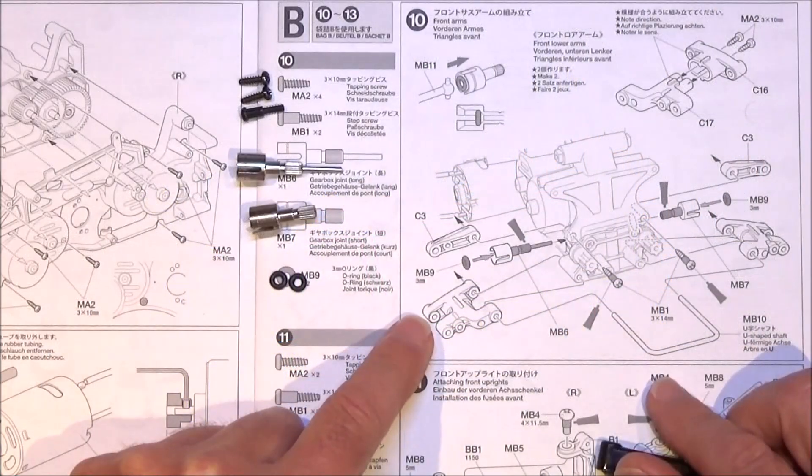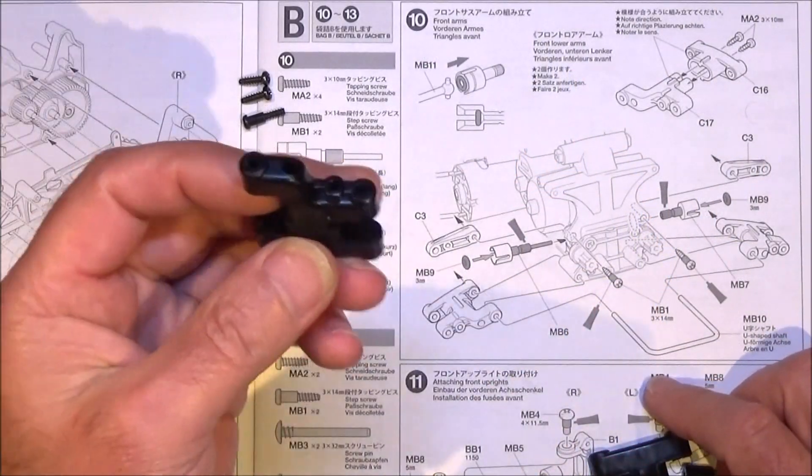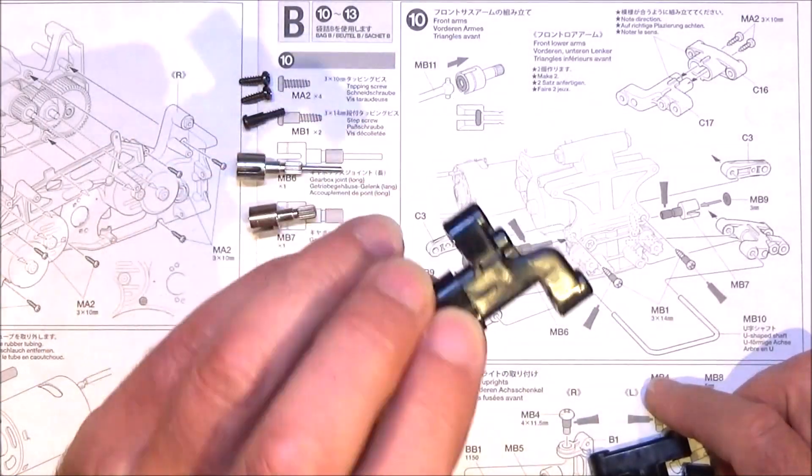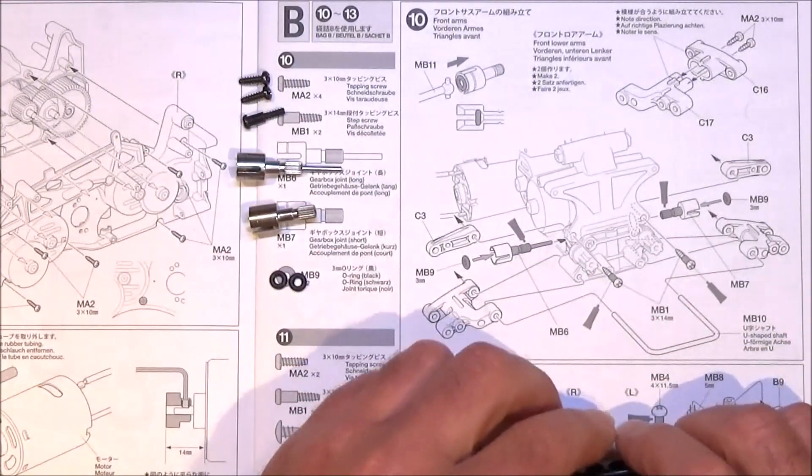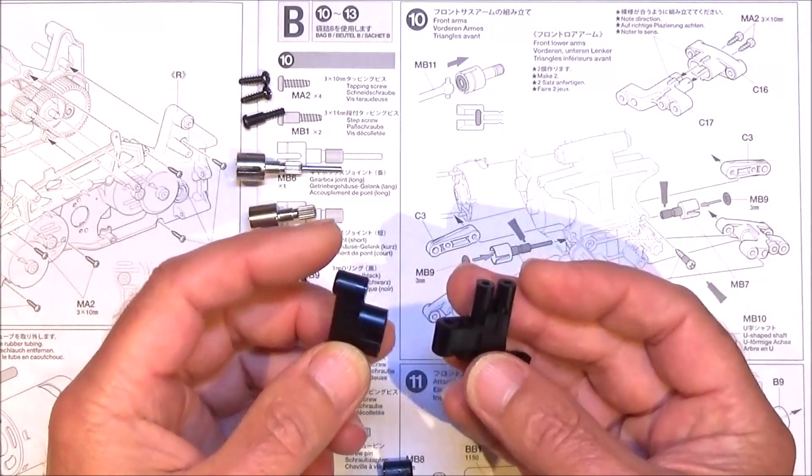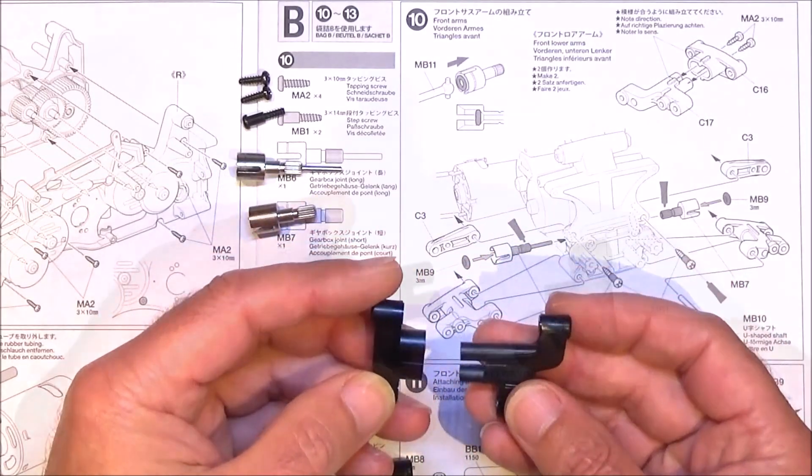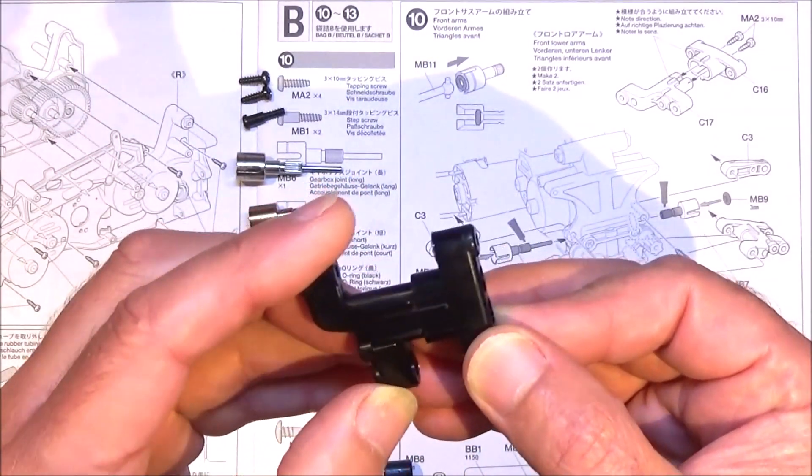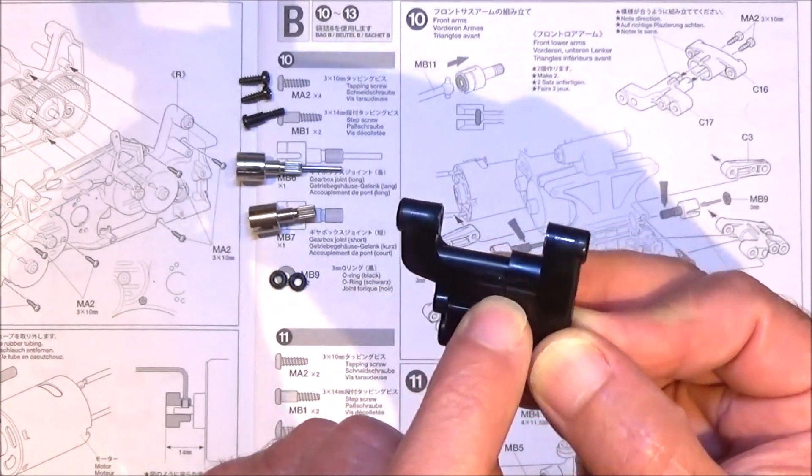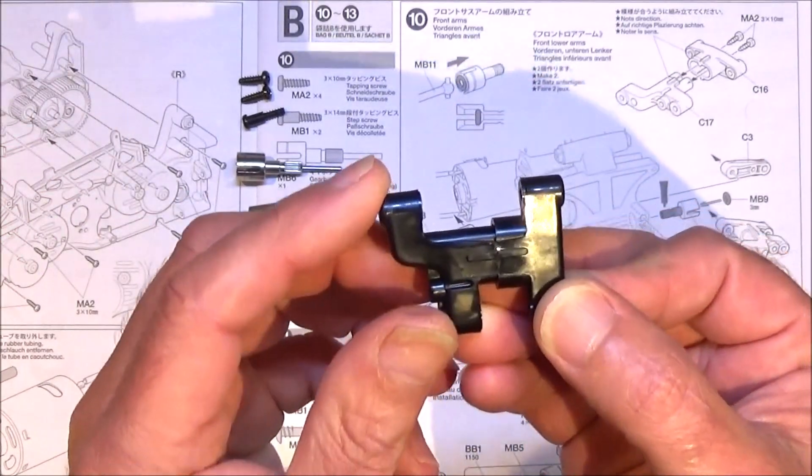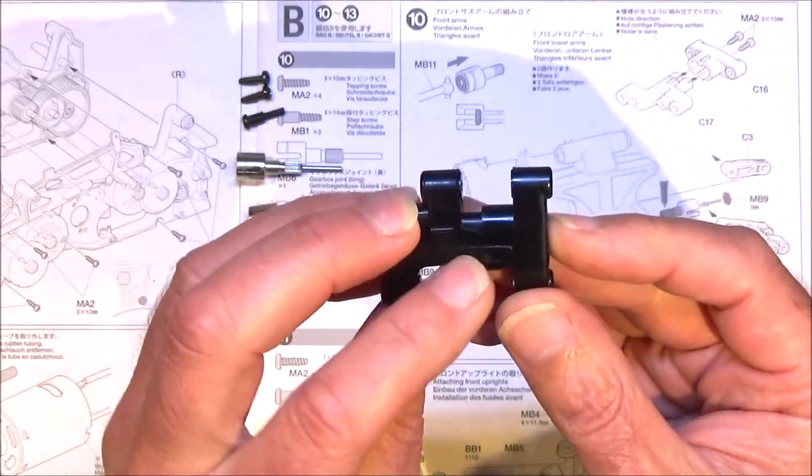Step ten is making up and fitting the front arms. I've made up one side which is this here. All you need is parts C17 and C16 and they just slot together like so. There are notches there that line up to show that you've got it the right way around. They only go one way.